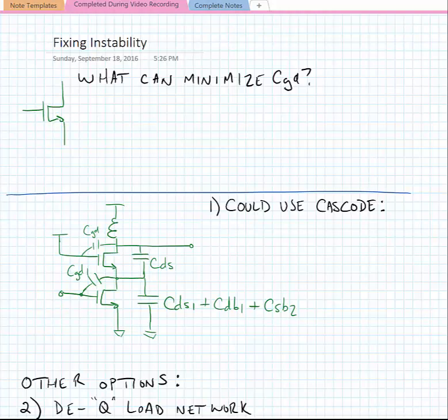And it should also be noted that if we were looking at bipolar devices, the C mu is the equivalent of the C gate-to-drain. So this isn't device specific.